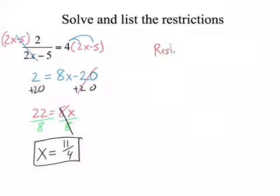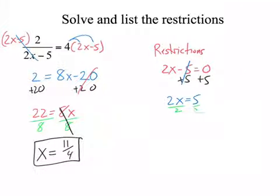My restrictions are when 2x minus 5 equals 0. So solve that. We add 5 to both sides. 2x equals 5, divide both sides by 2, so x equals 5 over 2.